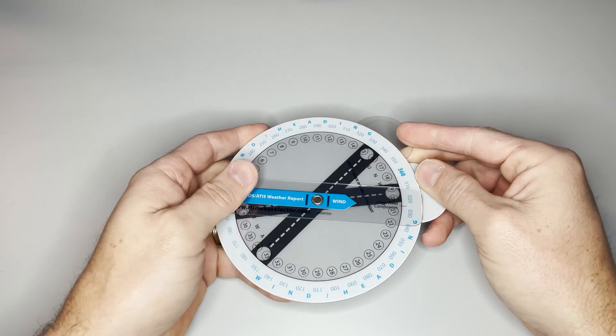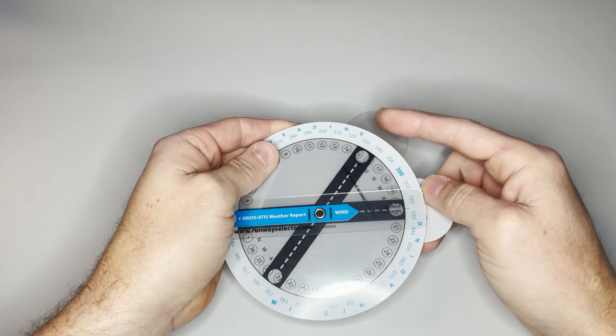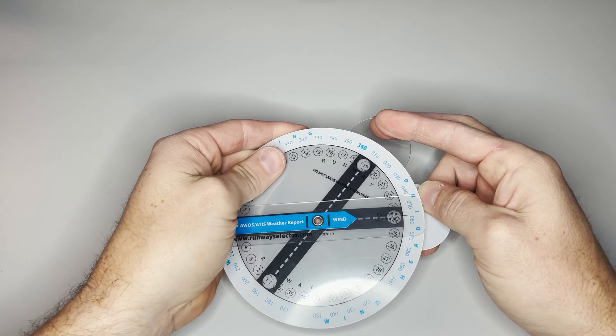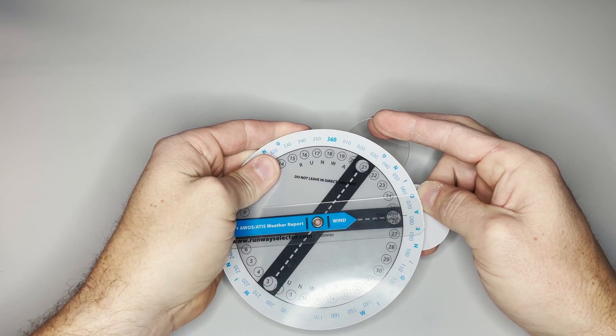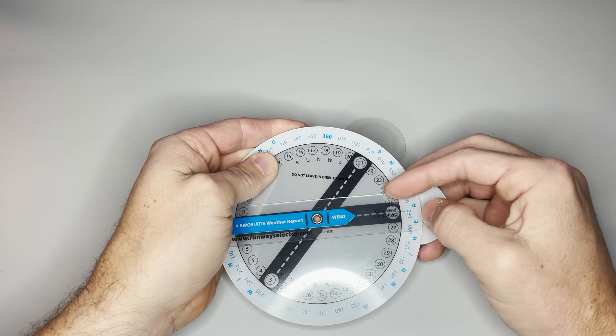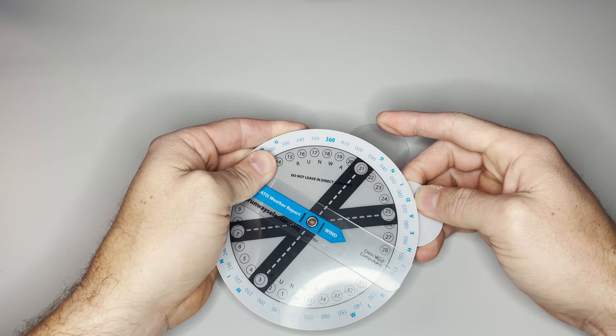One is runway 21 and the other is 25. So I'll go ahead and input runway 21 up here and then find 25 on my other one.